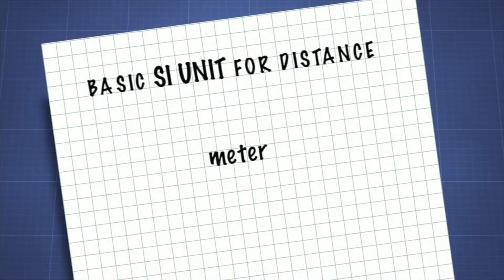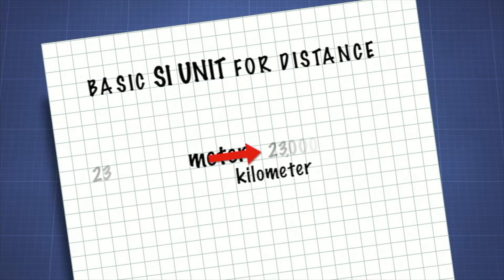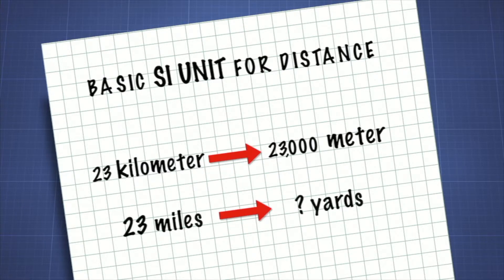For example, the meter is the basic SI unit for distance. Other distance-based units derived from the meter are the millimeter, the centimeter, and the kilometer. One meter equals 1,000 millimeters, or 100 centimeters, and one kilometer equals 1,000 meters. It's much easier to calculate how many meters are in 23 kilometers than how many yards are in 23 miles.